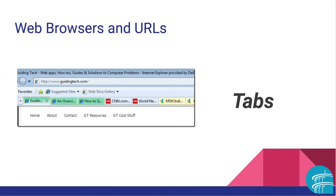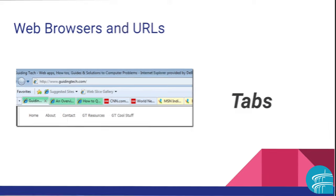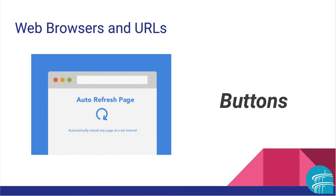Tabs are the feature that allows users to have more than one web page or website open at one time and easily move back and forth between them. Buttons are the features that allow users to access specific web browser functions such as refresh the page, move forward or back between screens, or return to the home page for the web browser.